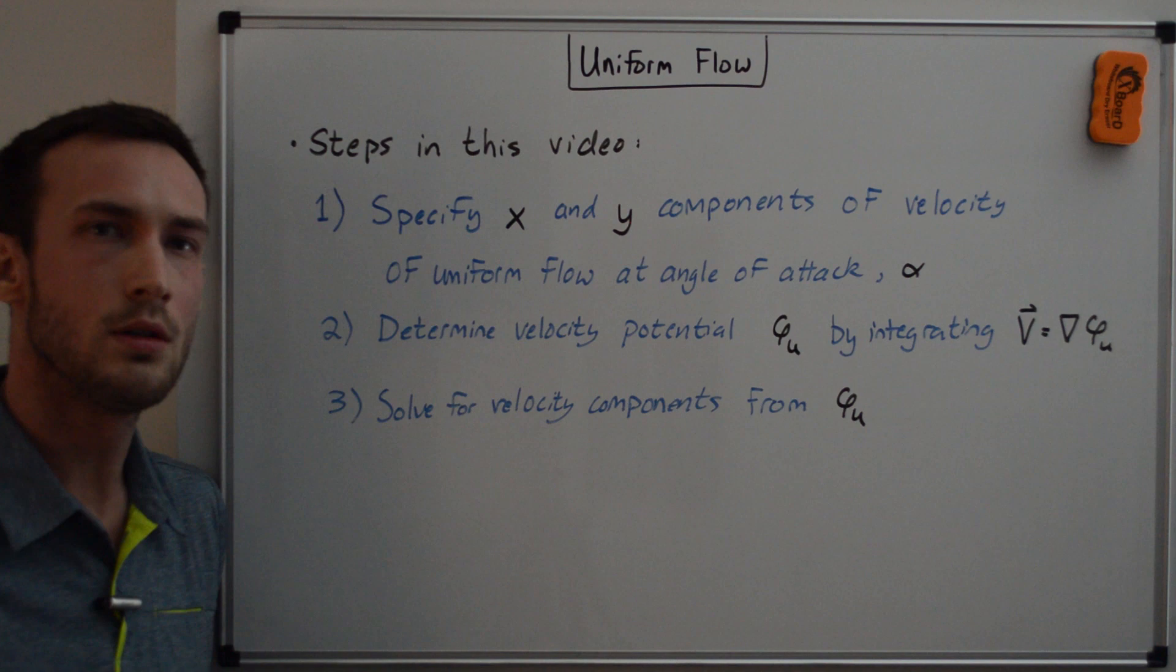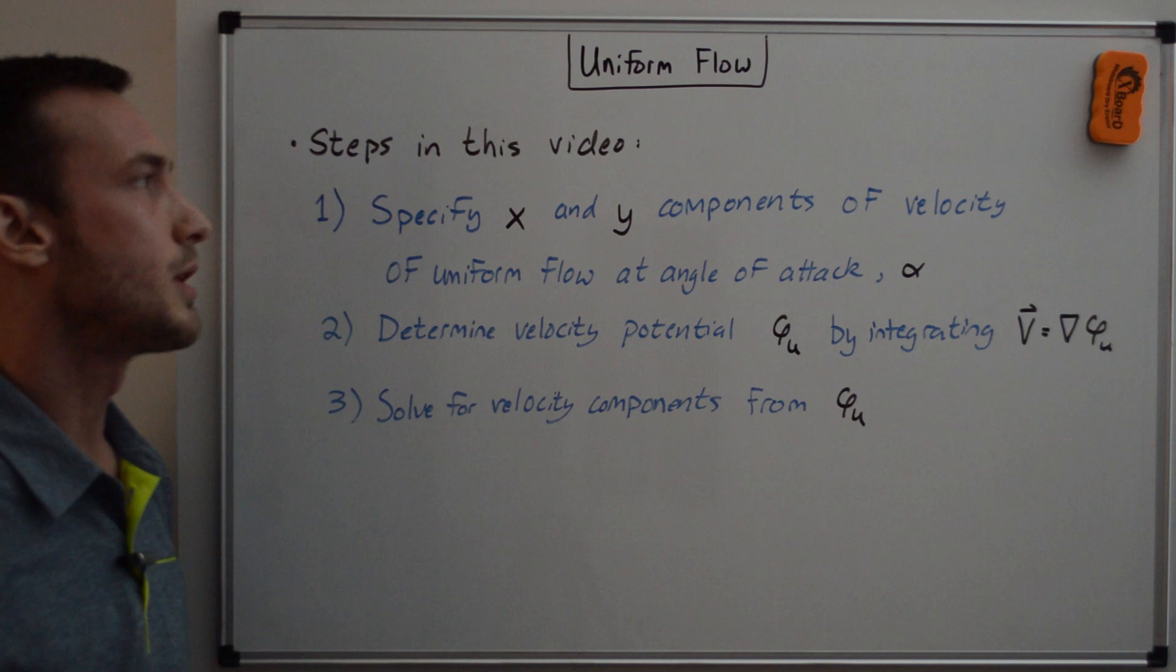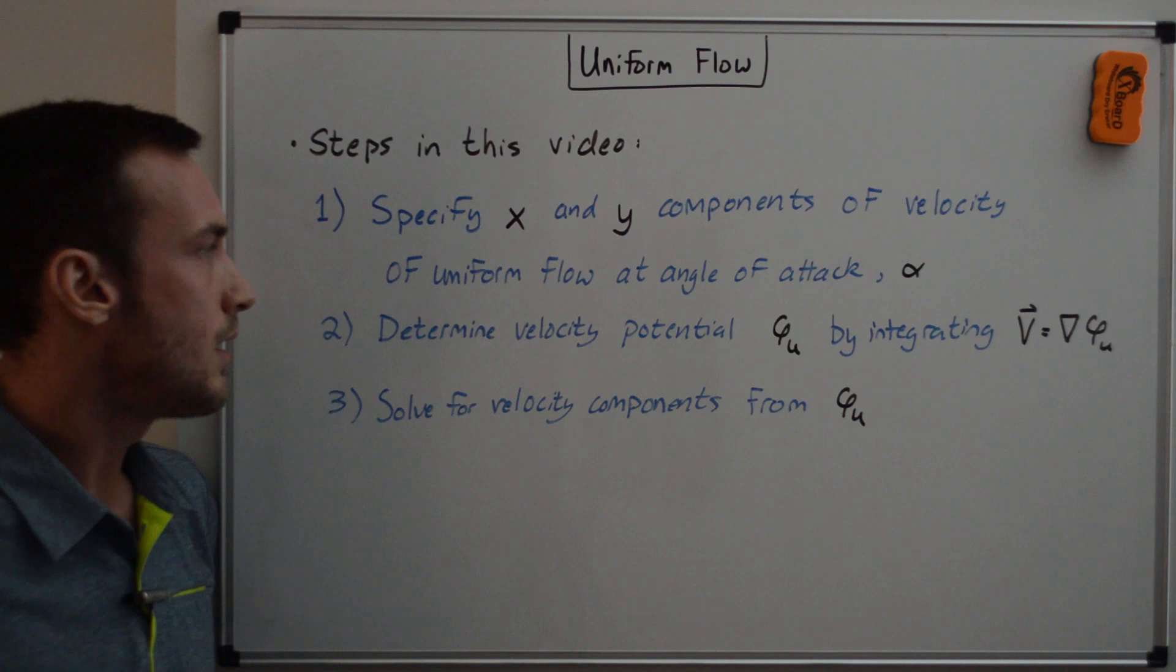The steps here are going to appear a little circular, but they won't be for the remaining elementary flows that I'll be going through. So the first step is to specify the x and y components of velocity of uniform flow and the angle of attack alpha.